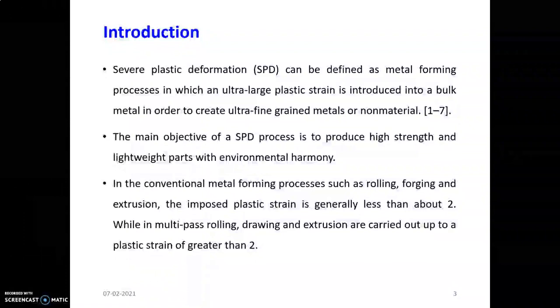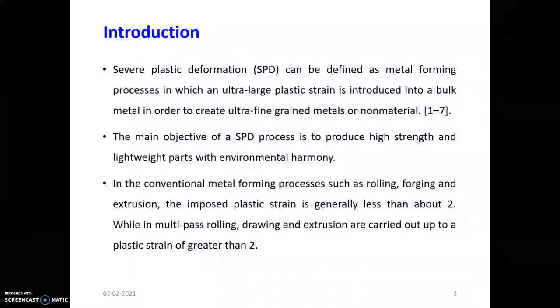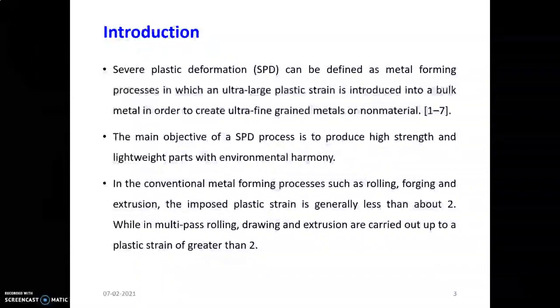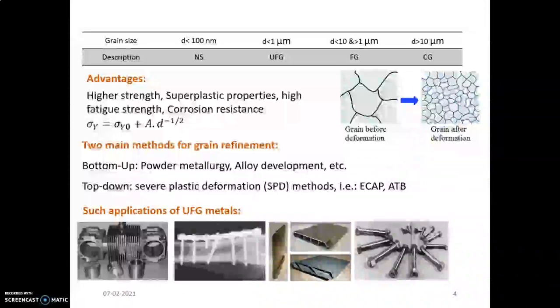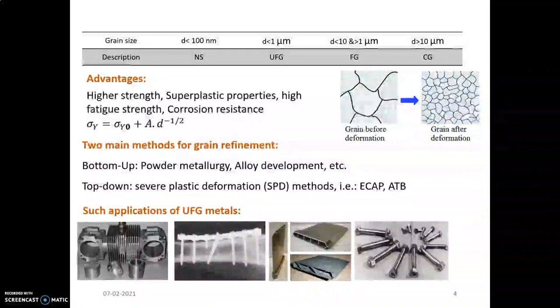Many processes such as rolling, forging, and extrusion are also severe plastic deformation processes where plastic strain is introduced, but which is less than 2, while in this process it is more than 2. It's called nanostructure because the grain size is less than 10 nanometers. You can see the description of grain size: if it is less than 10 nanometers it is nanostructure, if it is less than 1 micrometer it is ultra fine grain.